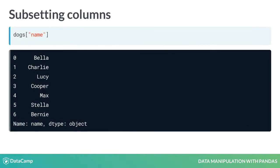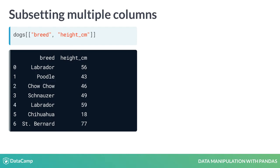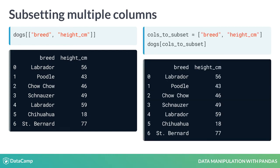We may want to zoom in on just one column. We can do this using the name of the data frame, followed by square brackets, with the column name inside. Here we can look at just the name column. To select multiple columns, you need two pairs of square brackets. The outer square brackets are responsible for subsetting the data frame, and the inner square brackets are creating a list of column names to subset. This means you could provide a separate list of column names as a variable, and then use that list to perform the same subsetting, though usually it's easier to do in one line.